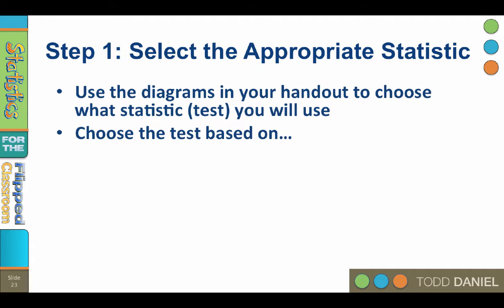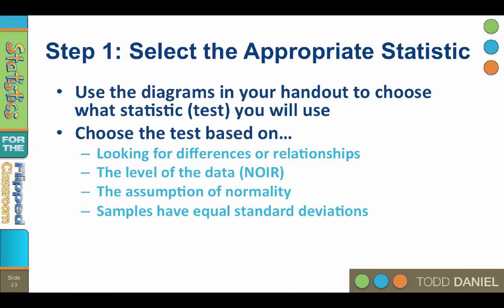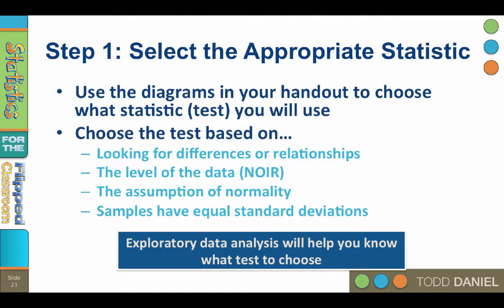We need to determine which test to use based upon whether our research question is looking for differences between groups or relationships between variables. We need to consider the level of our data — nominal, ordinal, interval, or ratio — and whether our data are approximately normally distributed. Do our samples have approximately equal standard deviations? Have the assumptions for the test been violated? All of these are questions we must answer before deciding what test to use, and we call this process exploratory data analysis.